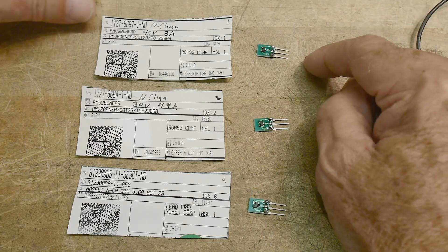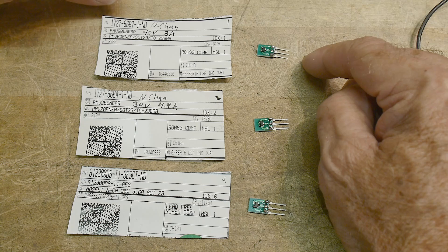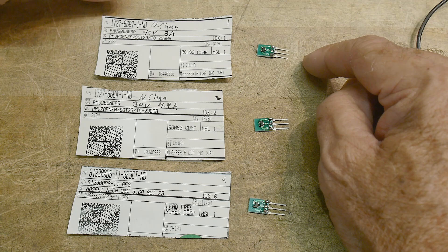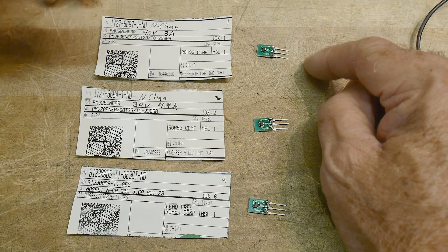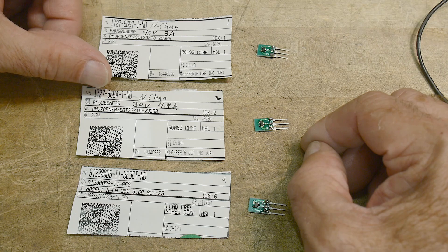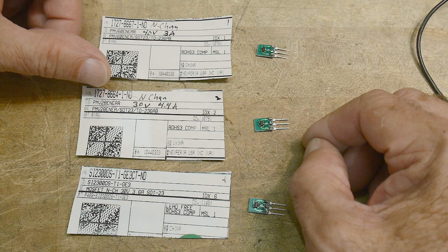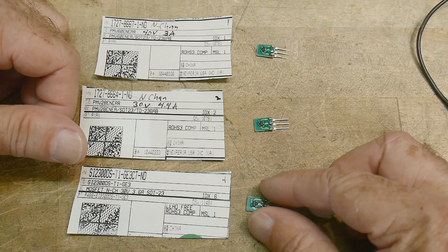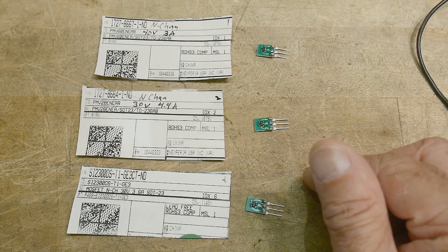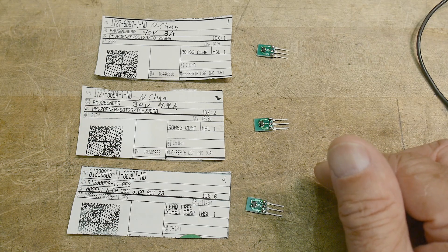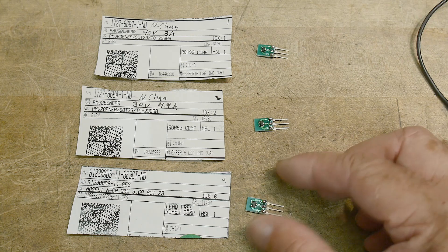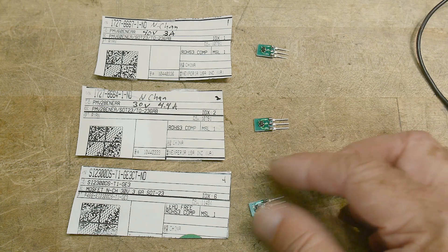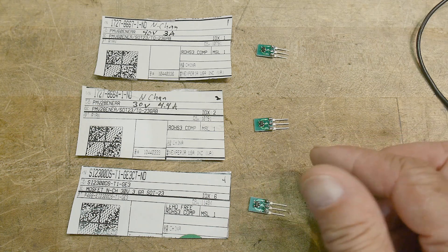The part number here is a PMV60ENEAR. This one is a PMV26NEAR. This one is a SI2300DS T1GE3. Yeah, they all have long names, but they're all going to be basically the same thing.